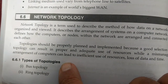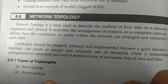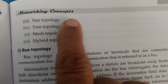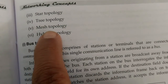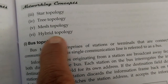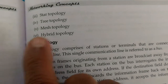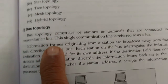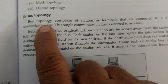There are six types of topologies: bus topology, ring topology, star topology, tree topology, mesh topology, and hybrid topology. First, I shall discuss bus topology.